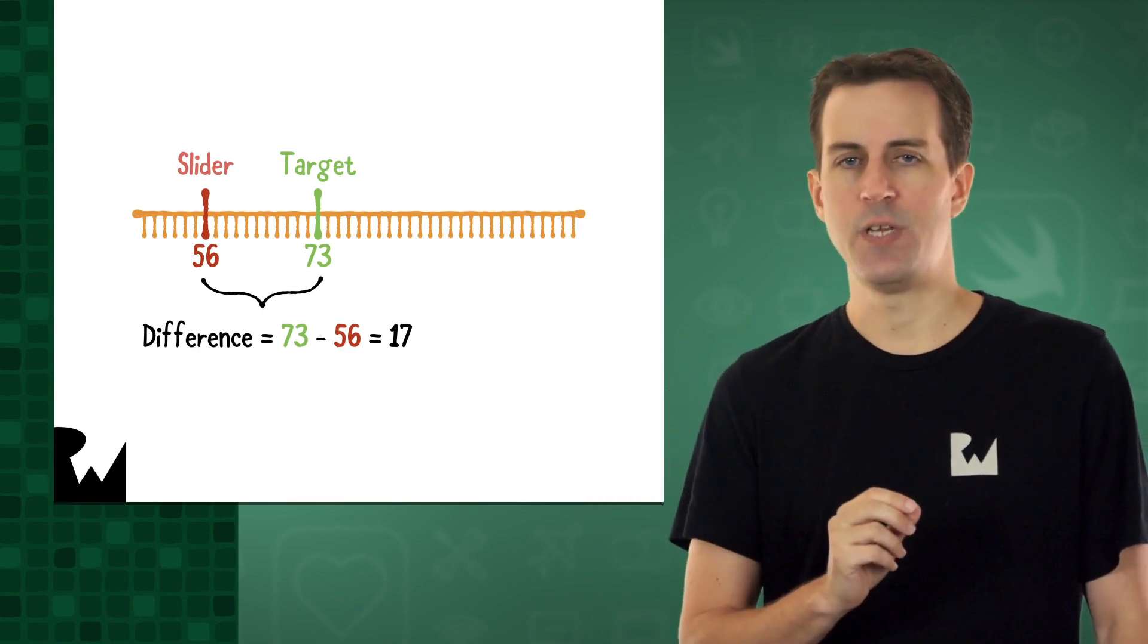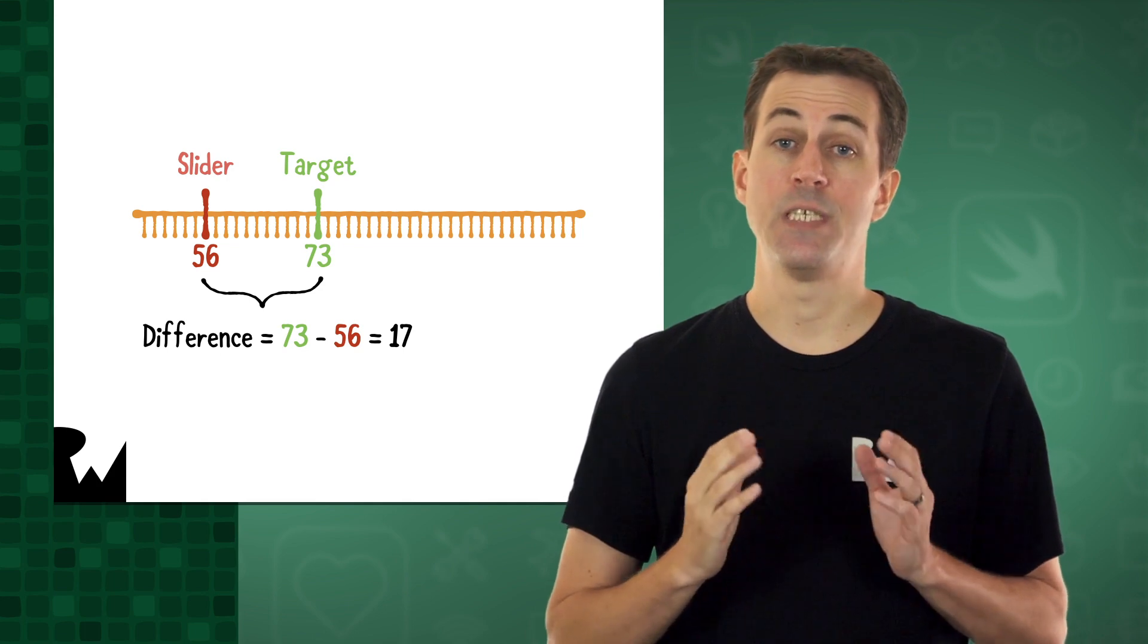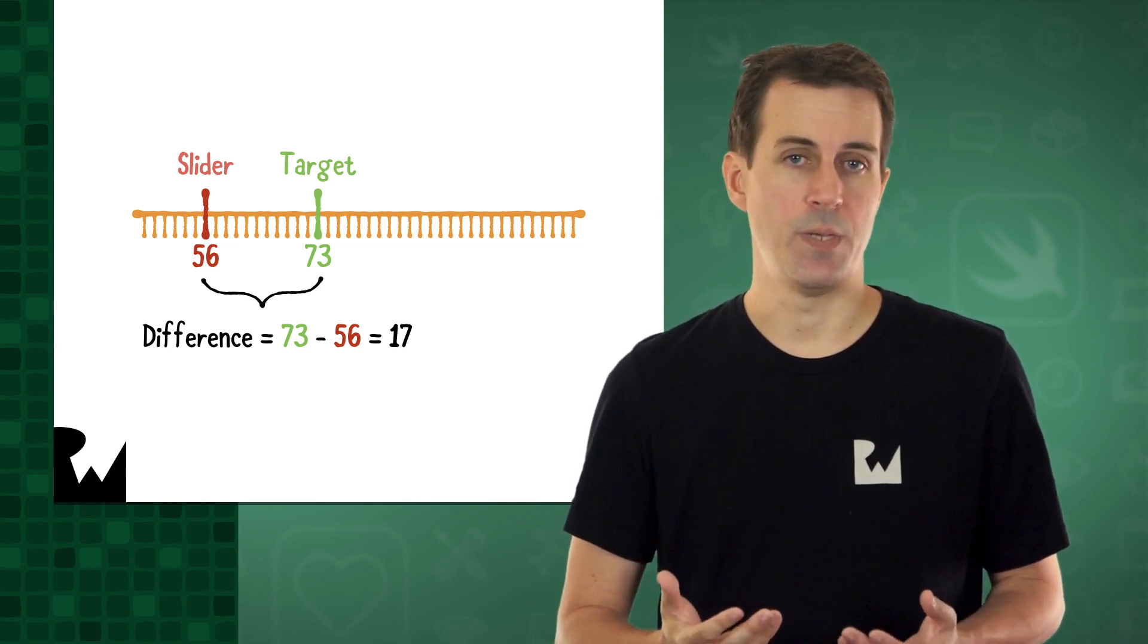For example, if the target is 73 and the player drags the slider to 56, the player is within 17 of the target, so the difference would be 17.